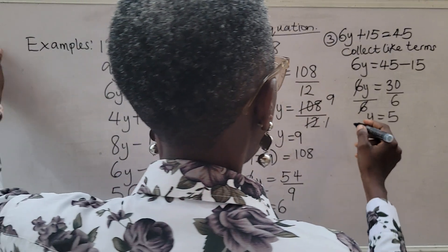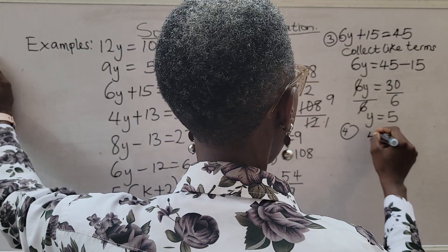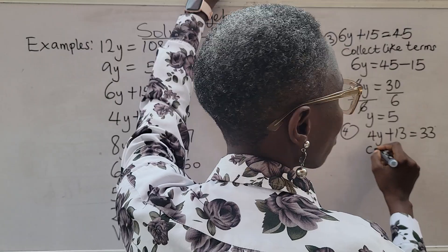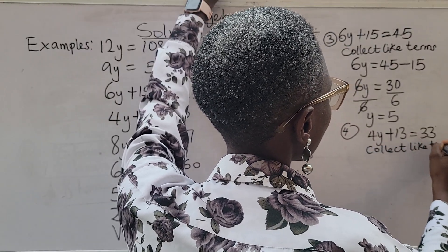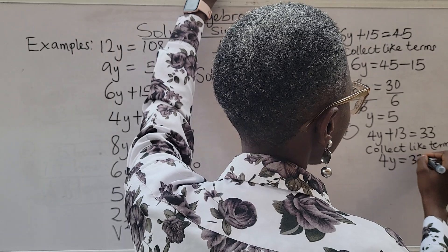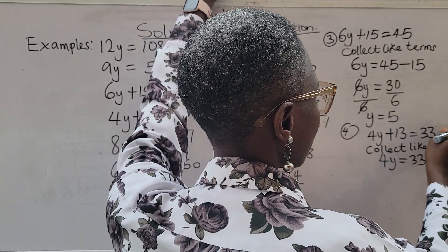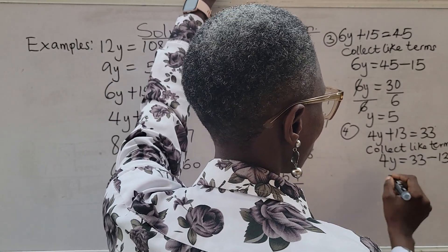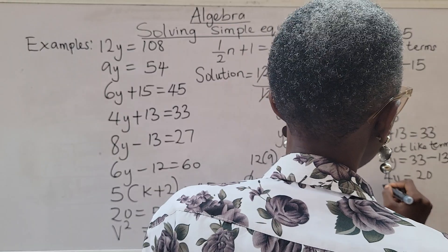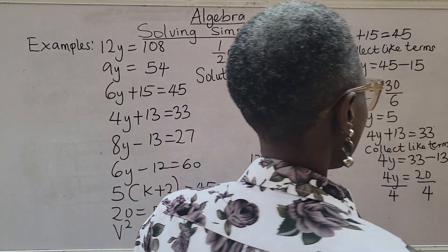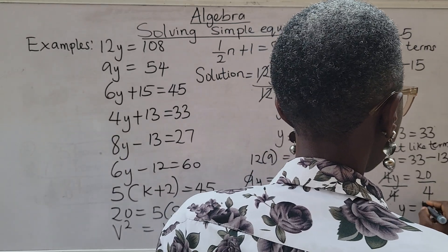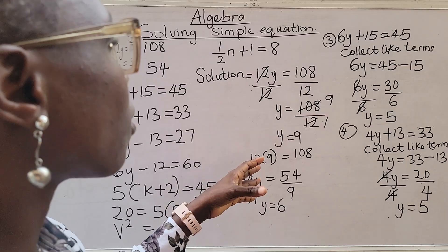Then let's do another one like it. Number 4. We have 4y plus 13 equals 33. So we have, just like the way we did, we collect like terms. Which is going to be 4y equals 33. This is plus 13. It's crossing over to meet the family. Minus 13. So 4y is going to be 20. So if it's 20, we are going to divide both sides by the coefficient of y. So 4 cancel 4. We are left with y equals 20 divided by 4. That is 5. You can see that we are getting the value for what? For y.